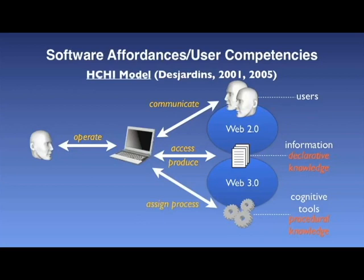The HCHI model, or the Human-Computer-Human Interaction model, produced by Desjardins 2001–2005, is used as the basis for determining the competencies which will be addressed by the affordances embedded in the software tools used. In some cases, more than one competency or more than one affordance is embedded within the same tool.